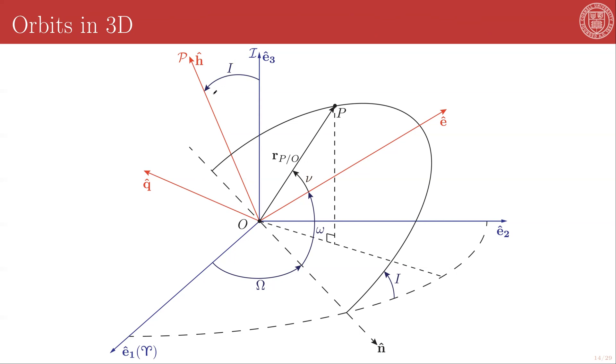The inclination tells us how much the specific angular momentum direction is offset from the original E3 direction, and the argument of periapsis tells us how much the E hat direction is offset from the line of nodes. And then you'll recall that nu measures the angle between the E hat direction, the eccentricity vector direction, or the periapsis direction, and the current orbital radius of the orbiting body. And note that omega and nu are measured in the same plane.